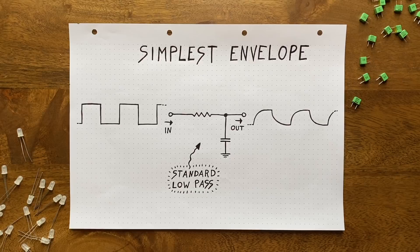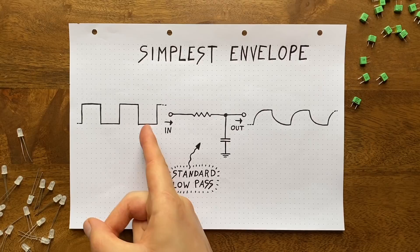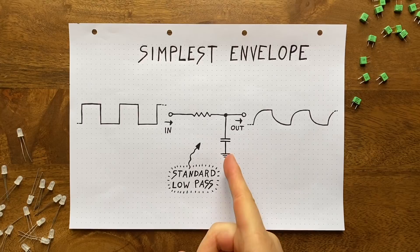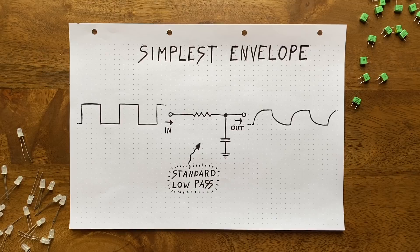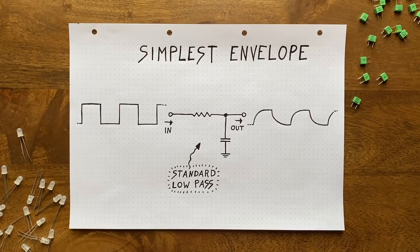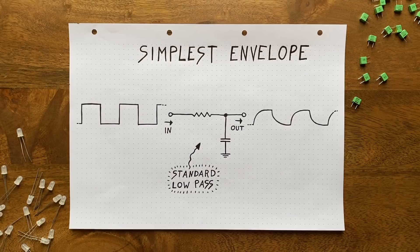Until the cap is completely filled up and the voltages here and here align. Then when the input signal swings low, the whole process reverses. Now the capacitor will push its contents through the resistor and into the input, so to speak. This happens because the voltage on this side is much higher than the voltage over here. Then as the capacitor empties out slowly, the two voltages align again. As you can see, this will turn our square wave input into something like a very basic attack release envelope.